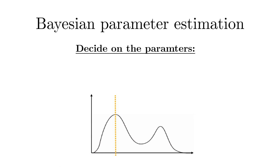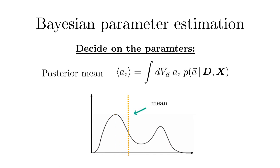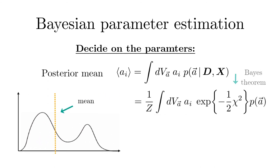A more reliable characterization of the parameters is given by the posterior mean. Here we finally need the normalization, which can be obtained by the following integral.